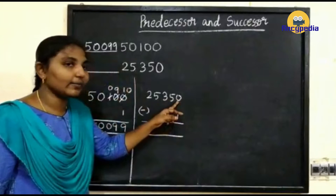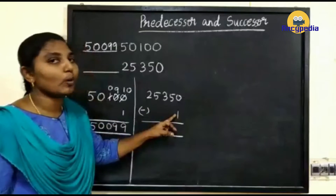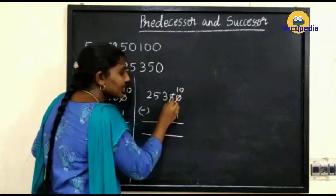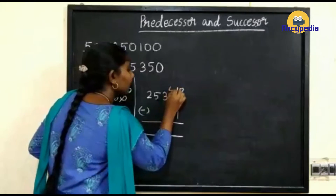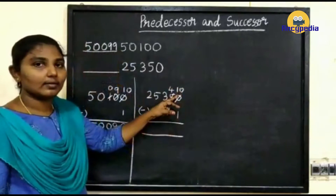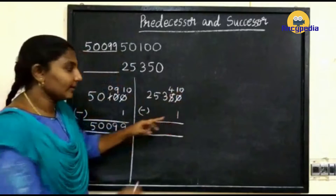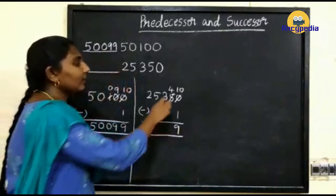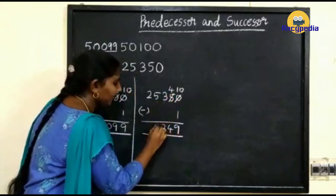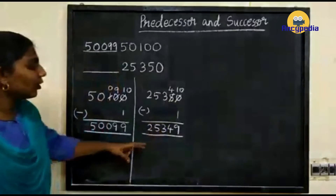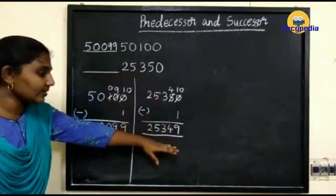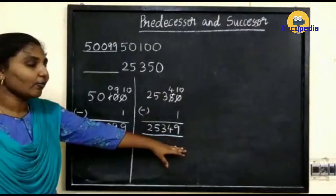Here we have 1 and here we have 0, so we can't subtract 1 from 0 — we have to take a borrow. We now have 10. Here we have 5, so we write 4 after borrowing. Now subtract 1 from 10: 10 minus 1 is 9, so write 9. Here we have 4, 3, 5, 2. What is the predecessor of 25,350? The answer is 25,349.